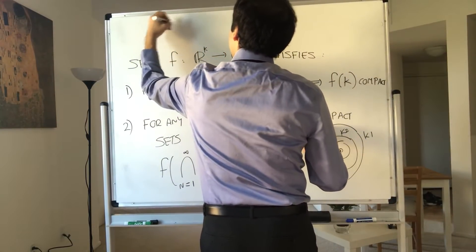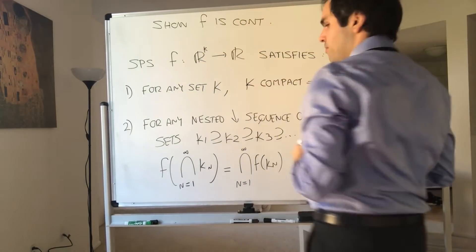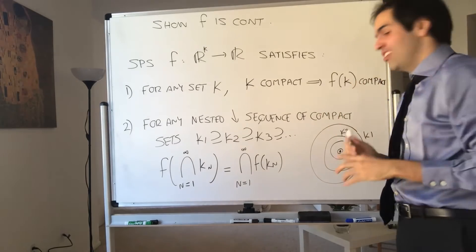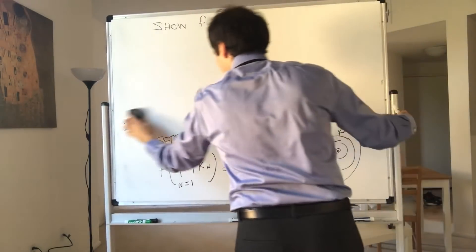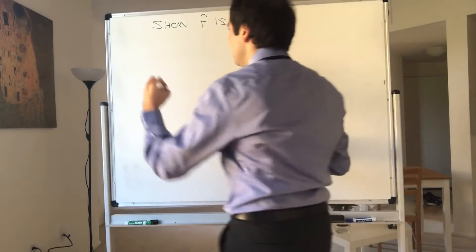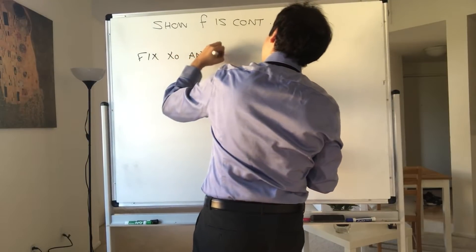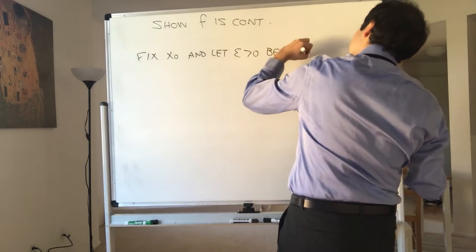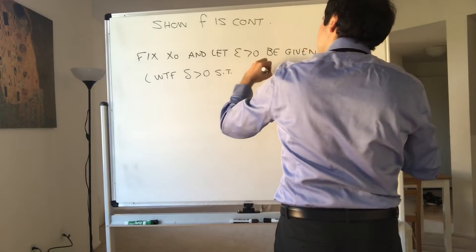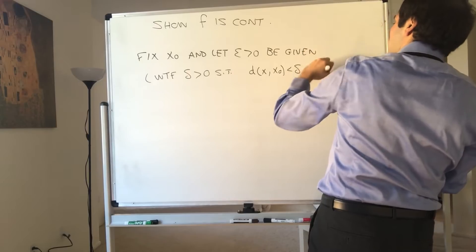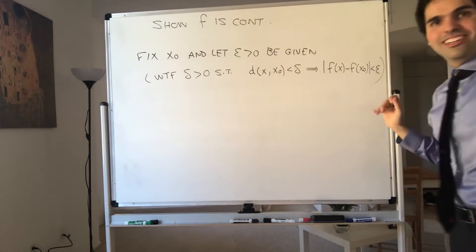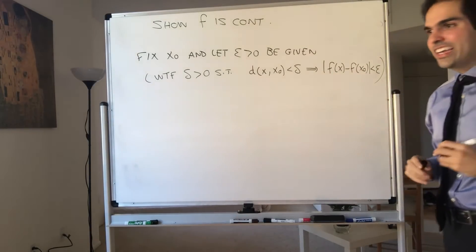Show that f is continuous. We'll do this by steps, and it's actually super interesting because it uses all those properties in a very subtle way. What do we have to show? We have to show it's continuous at x0 for every x0. So fix x0 and let epsilon be given. And what we want to do: we want to find delta such that for all x, if the distance between x and x0 is less than delta, then the absolute value of f(x) minus f(x0) is less than epsilon — using the usual distance metric on R^n.